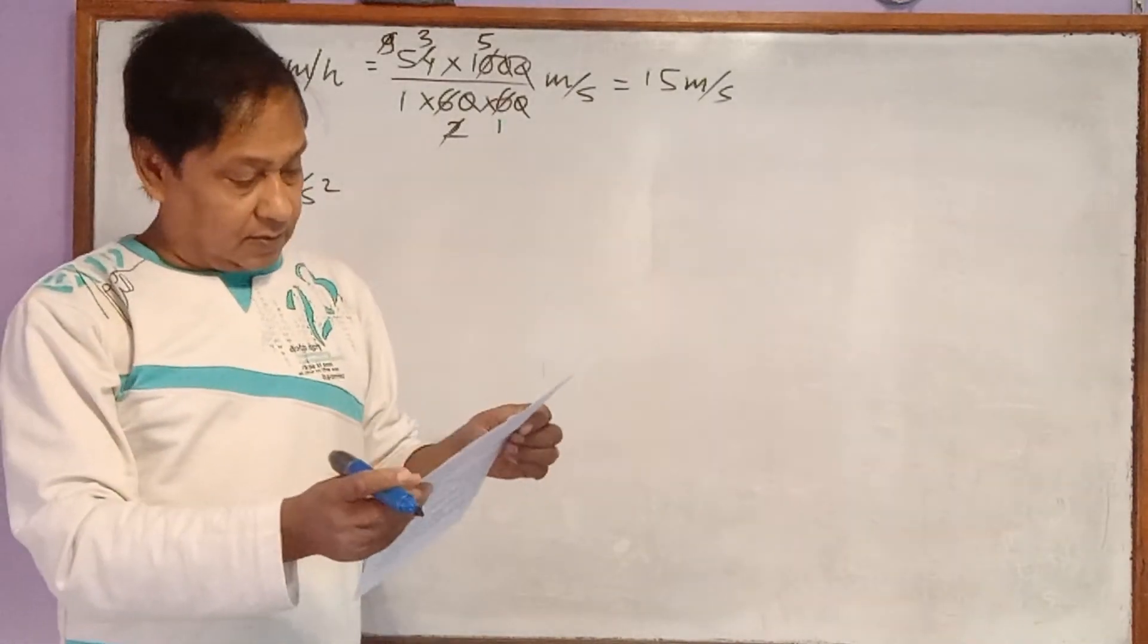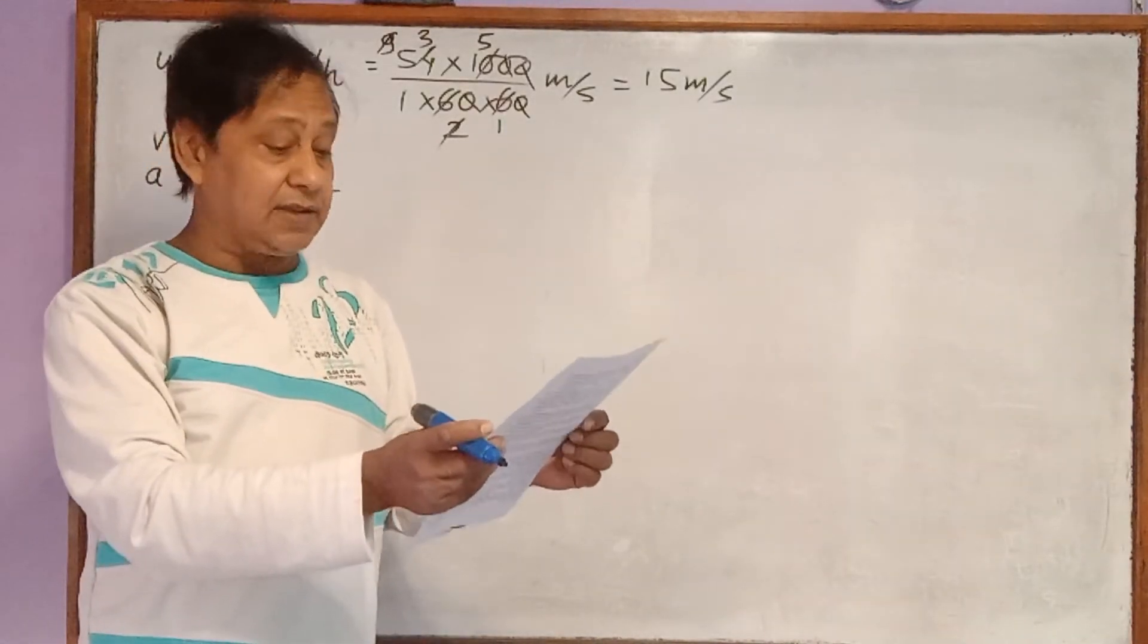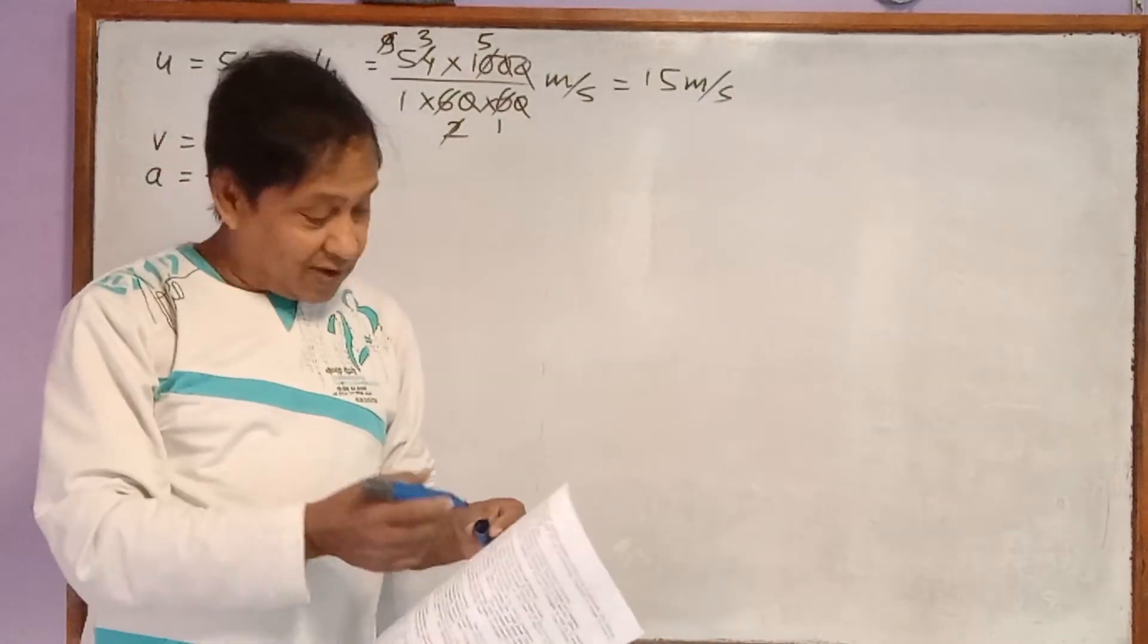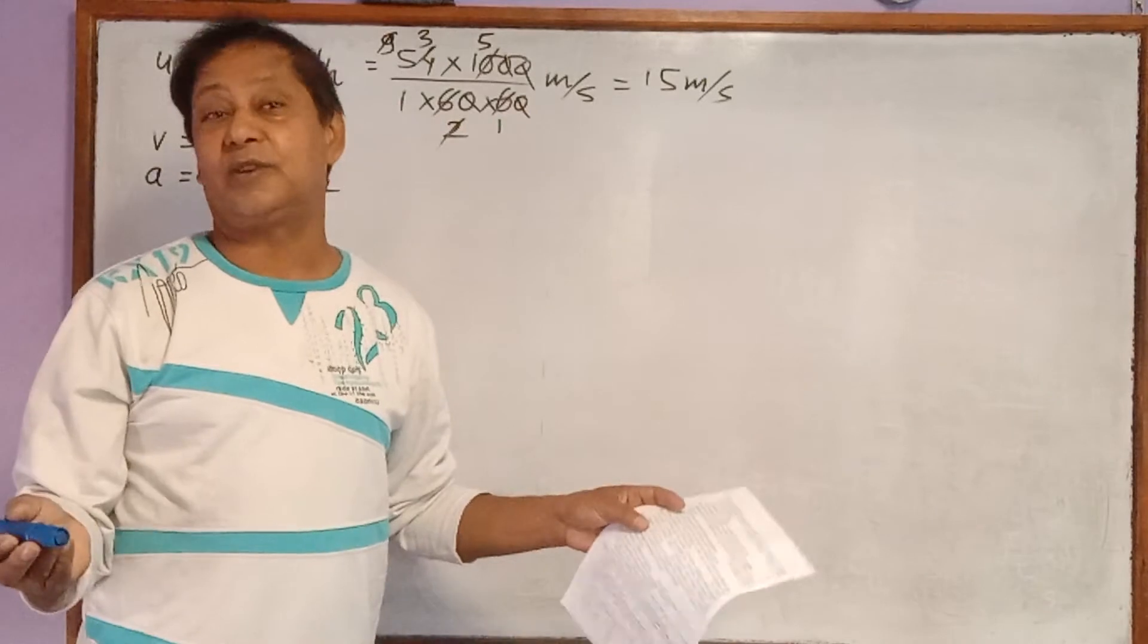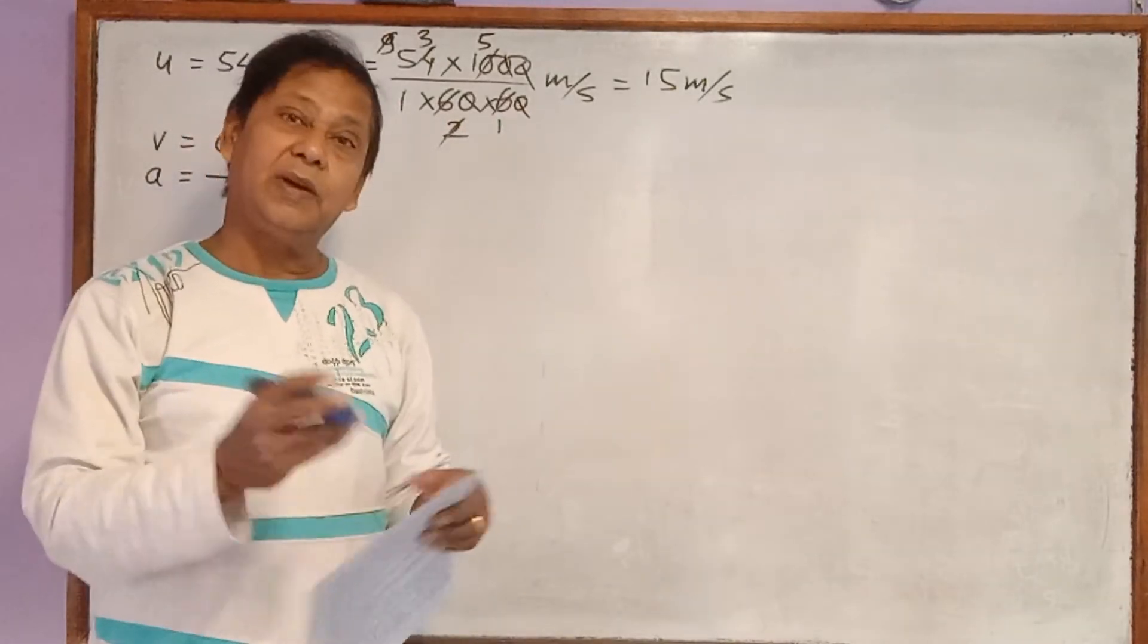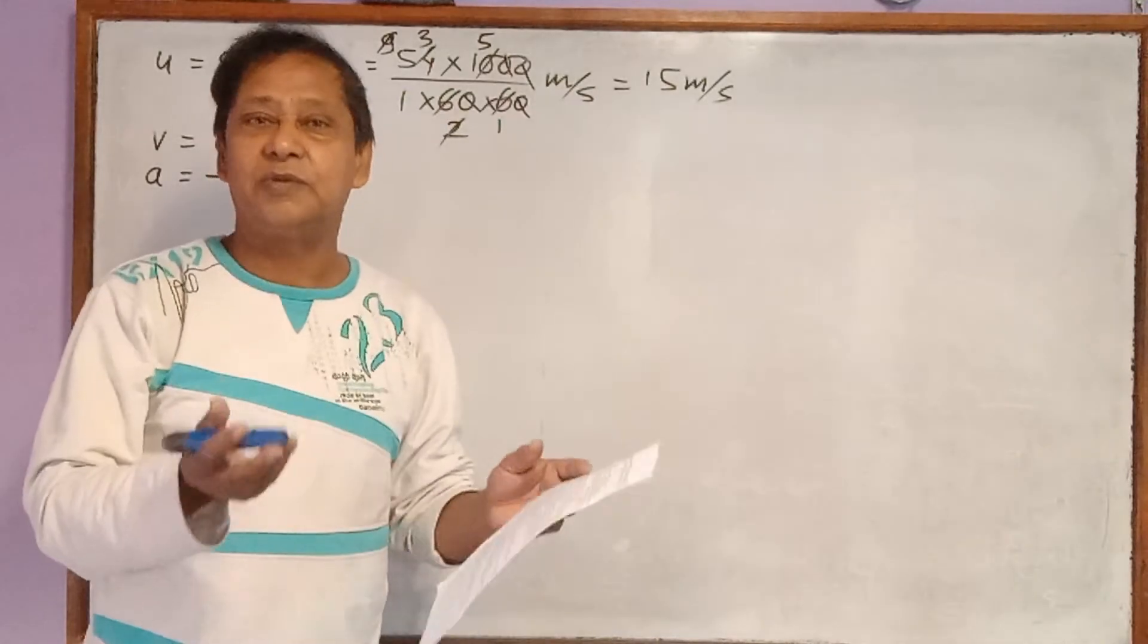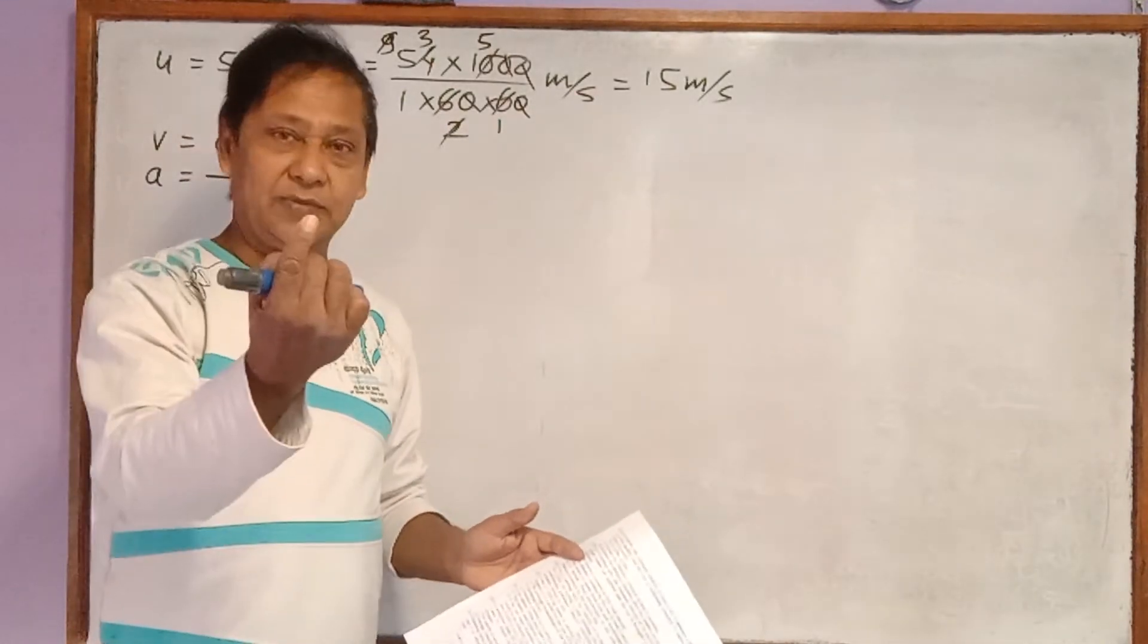Now what is to calculate? Write down whether the accident occurs or not. It means not any physical quantity is asked to find out. This is the confusion of this question.